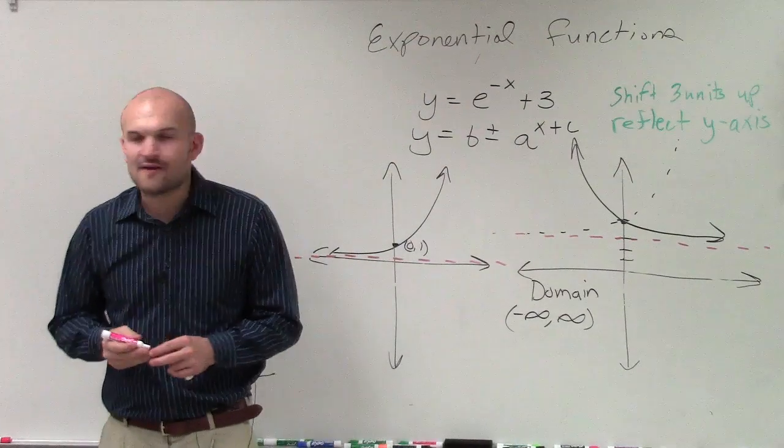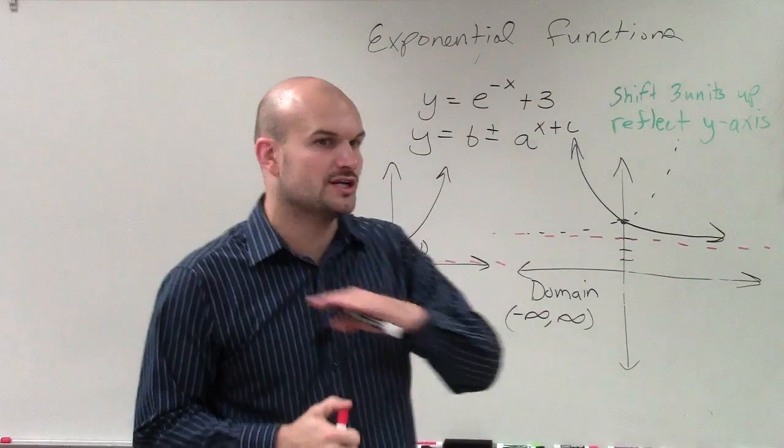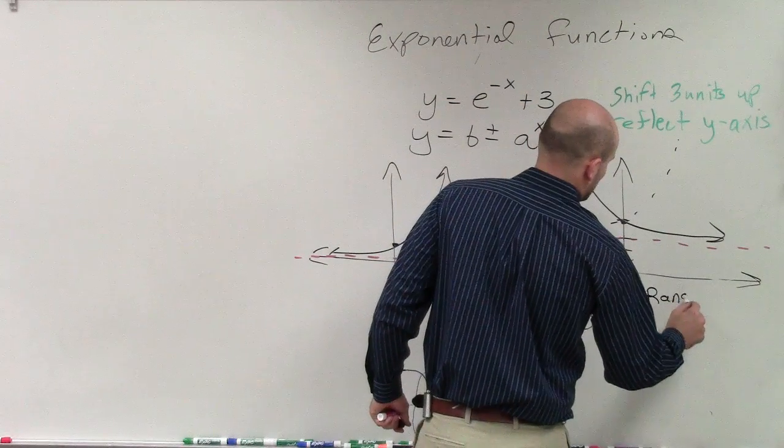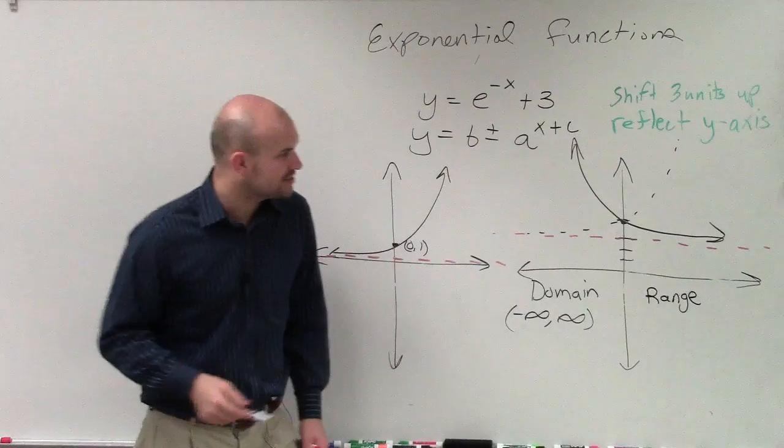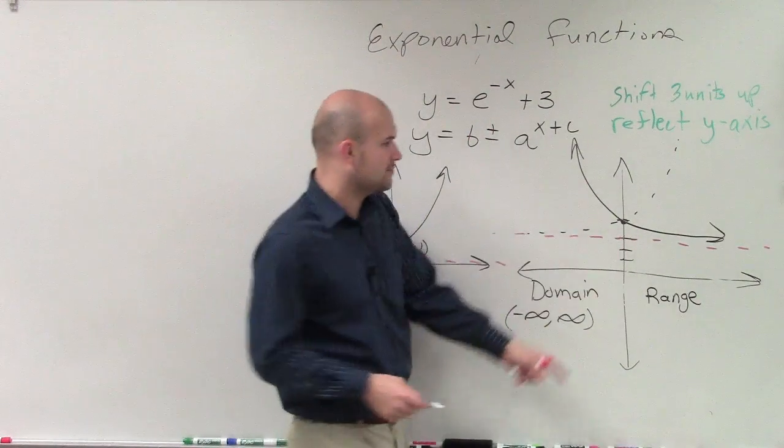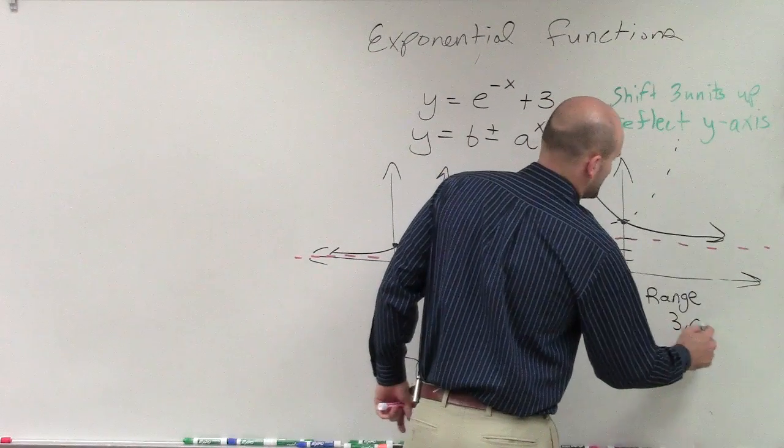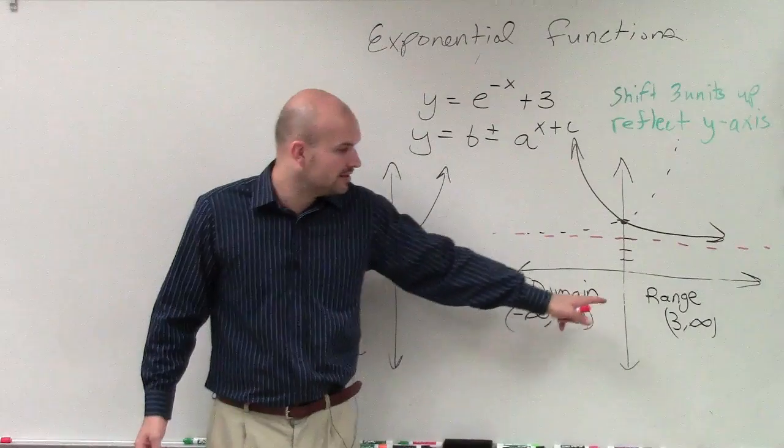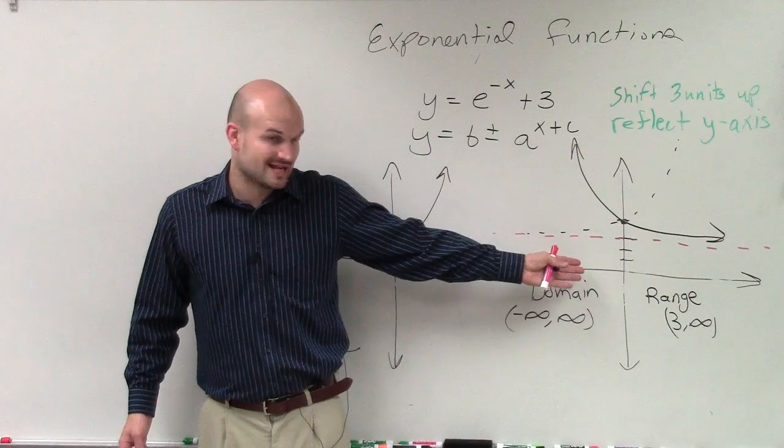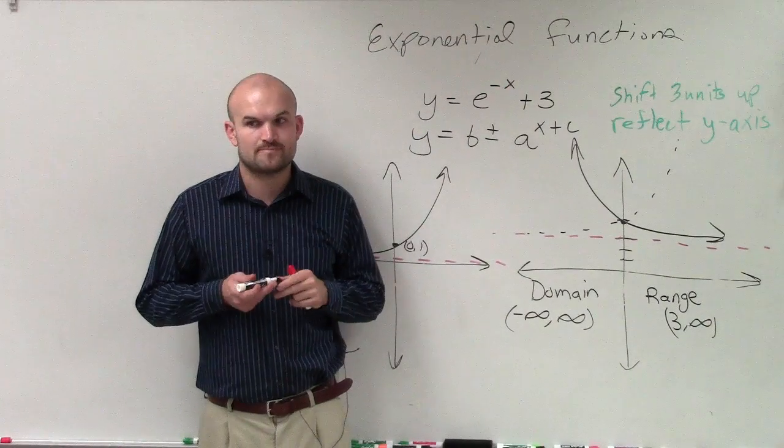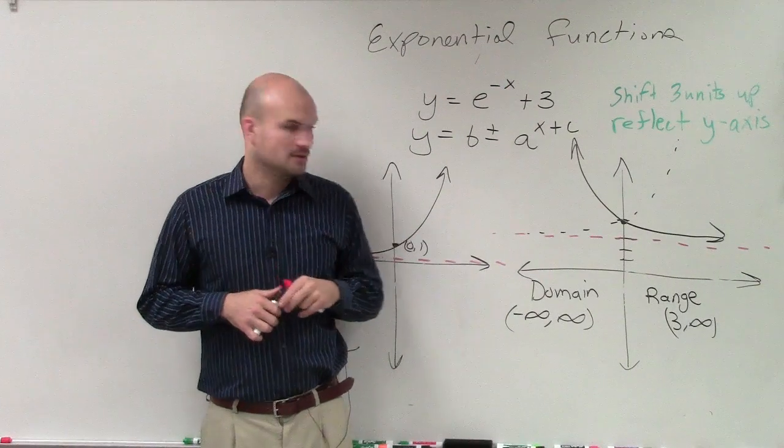So remember, my graph is not going to cross my asymptote. It's just going to approach it. So therefore, when we look at the range, you can say the range is going to be from my value of 3 to infinity. Because the lowest this graph is going to go is going to be 3, which doesn't contain the point 3. And it's going to go all the way up to infinity.